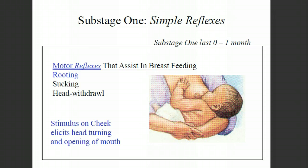Let's start by breaking Piaget's first stage of sensorimotor into those six sub-stages. The first of those sub-stages is referred to as simple reflexes. The idea is that the child is born into the world with several different schemas — that is, basic concepts — that help the child interact with the world successfully. Three of those schemas, which we also refer to as reflexes, would be rooting, sucking, and head withdrawal.